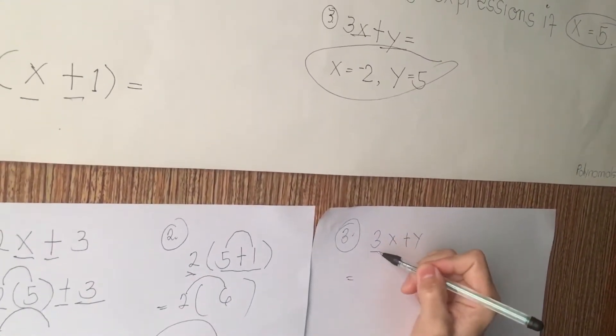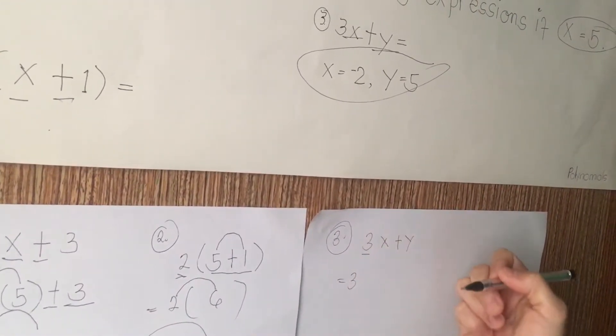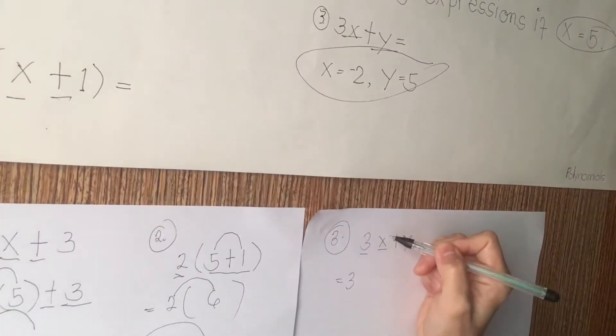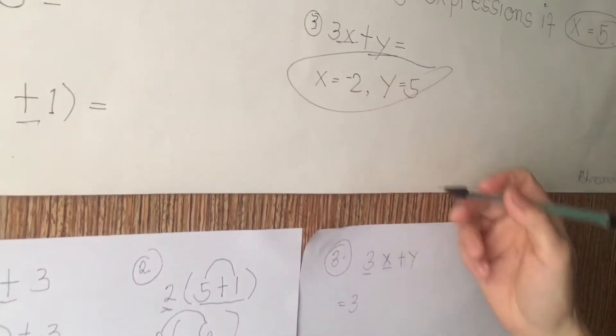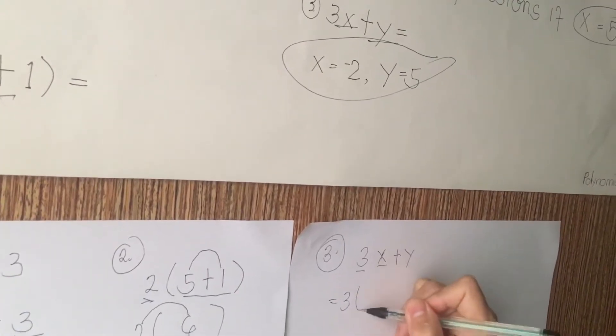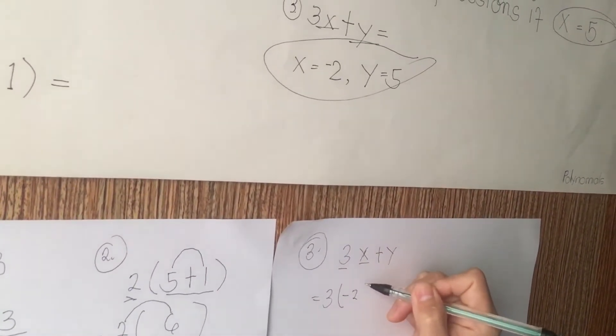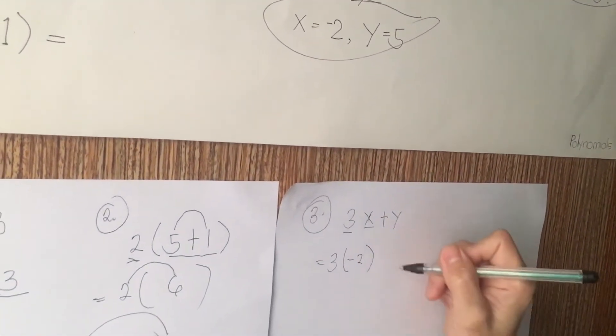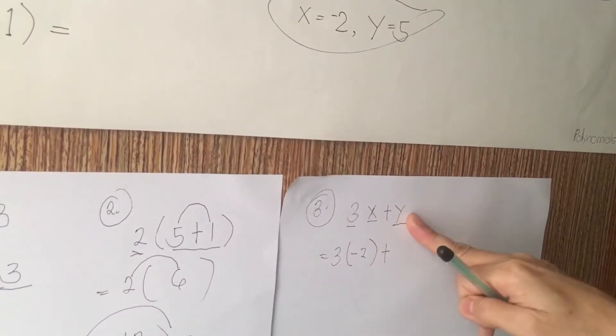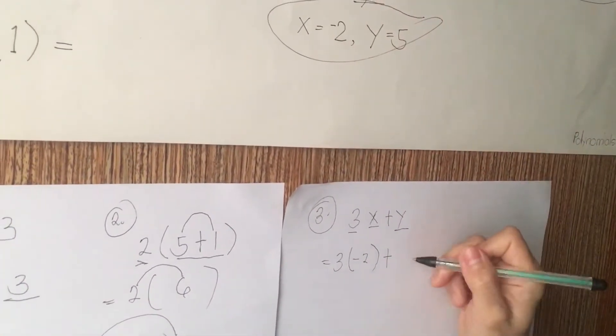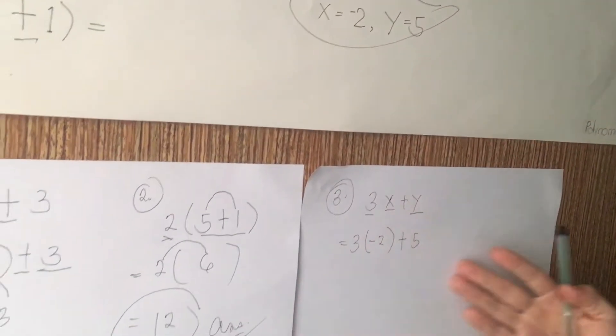Bring down 3. Then, I'm going to give the value of x, which is negative 2, in close parenthesis. Plus y. And then, I'm going to write y. The value of y is 5 here. This is very easy. Simple.